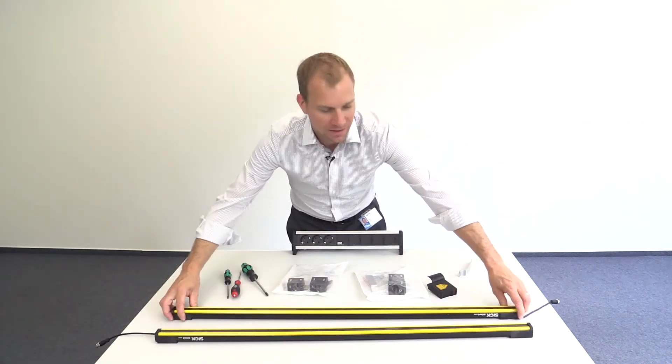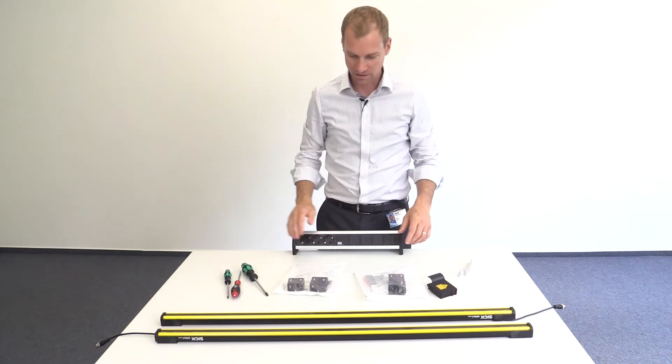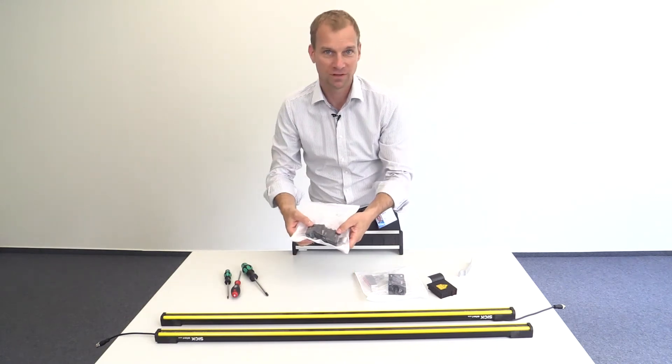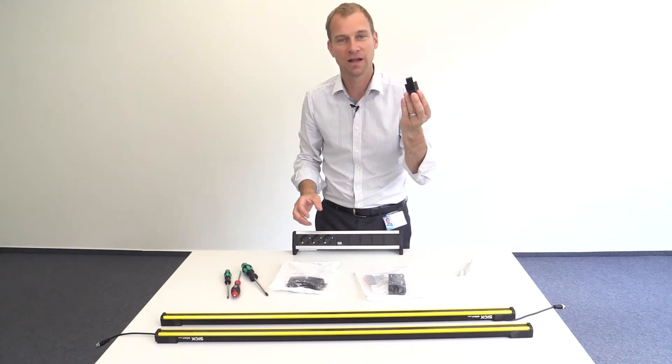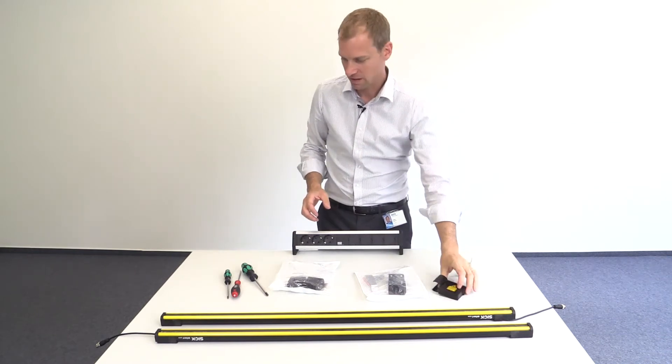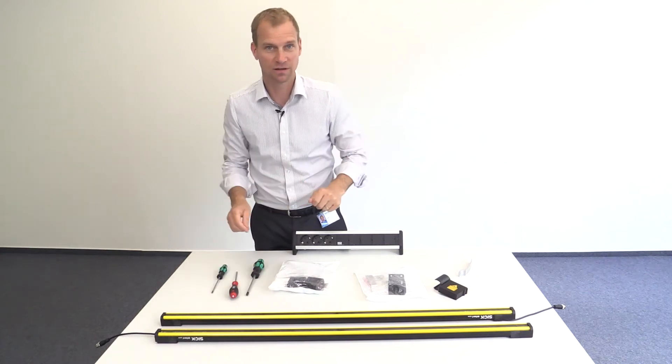We need a DTEM sender and receiver pair, the brackets for mounting the DTEM in the column, an alignment aid with a laser, and three allen keys for adjusting the screws.